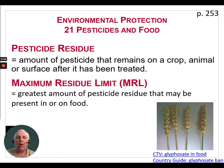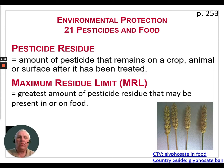The Pest Management Regulatory Agency, or PMRA, sets maximum residue limits for all pesticides registered in Canada. Approximately 96% of the food samples tested in Canada have either no detectable residue or residue below the maximum residue limit.